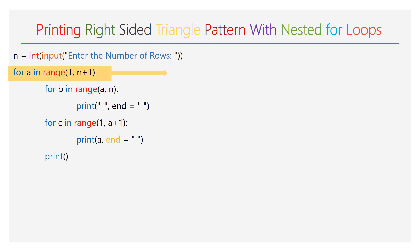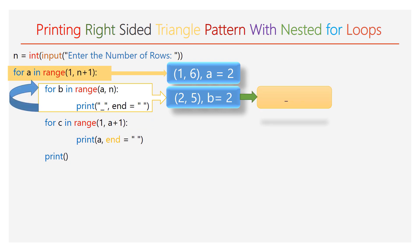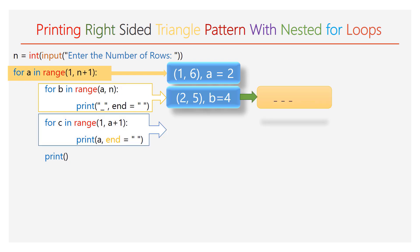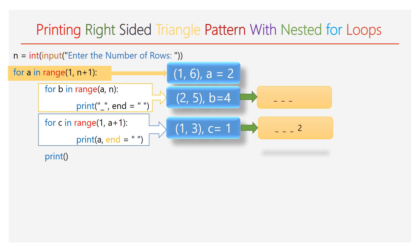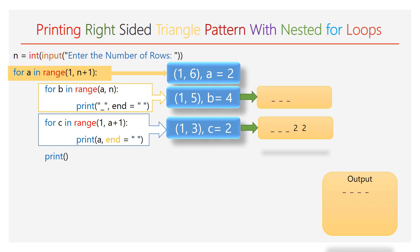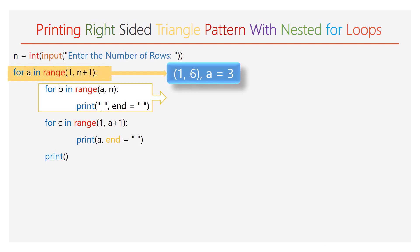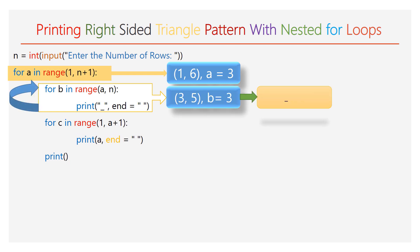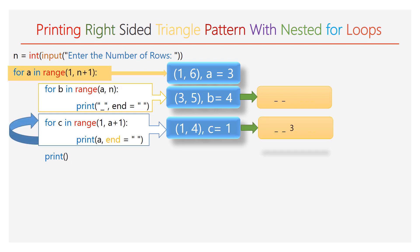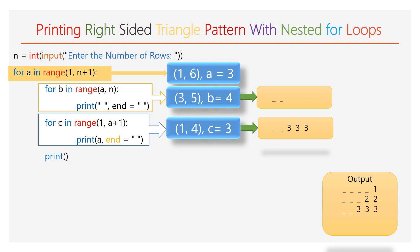The value of a is incremented to 2. The range of b will be 2 to 5 and will iterate 3 times. During each iteration, 1 empty space will be printed. The second inner for loop will have the range 1 to 3 and will iterate 2 times. During each iteration, 1 digit will be printed. At the end of the second iteration, two 2s will be printed in the second line. An empty print function is executed and the cursor enters the third line. The value of a is incremented to 3. The first inner for loop will iterate 2 times, printing 2 empty spaces in the third line. The second inner for loop will iterate 3 times, printing three 3s. An empty print function is executed and the cursor moves to the fourth line.